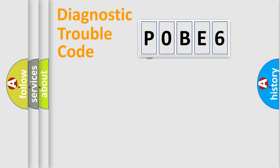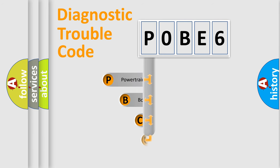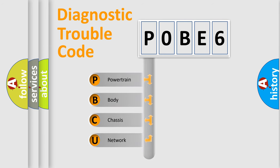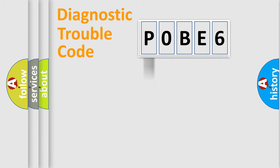First, let's look at the history of diagnostic fault code composition according to the OBD2 protocol, which is unified for all automakers since 2000. We divide the electric system of an automobile into four basic units: powertrain, body, chassis, and network. This distribution is defined in the first character of the code.